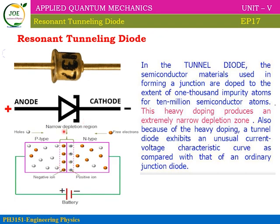In the PN junction diode, the P-type semiconductor has holes and the N-type has electrons. In this resonant diode, if the doping concentration is less, the charge carrier is less, so the depletion layer is narrower and the electron density is lower. This is the Resonant Tunneling Diode.